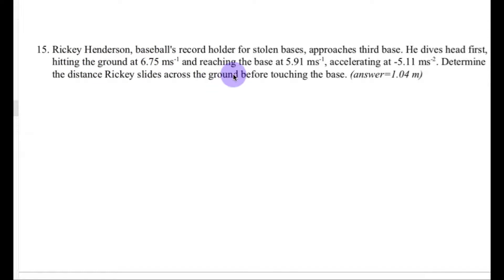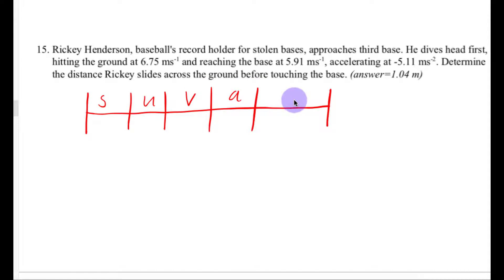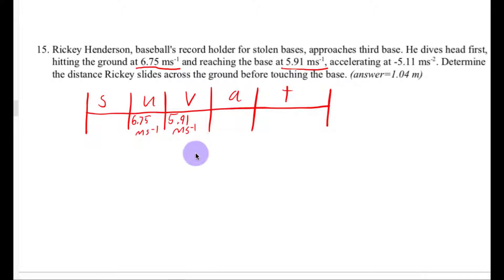Number 15: Ricky Henderson, baseball's record holder for stolen bases, approaches third base. He dives head first, hitting the ground at 6.75 meters per second and reaching the base at 5.91 meters per second, accelerating at negative 5.11 meters per second squared. We need to determine the distance he slides across the ground before touching the base, which is the displacement.